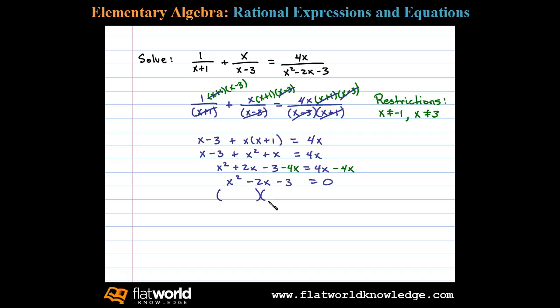Next we factor, here x times x, we'll use 1 and 3. In this case x minus 3 times x plus 1, negative 3 times positive 1 is negative 3 again and the middle term adds up to negative 2. So this is factored correctly so we next set each factor equal to 0.